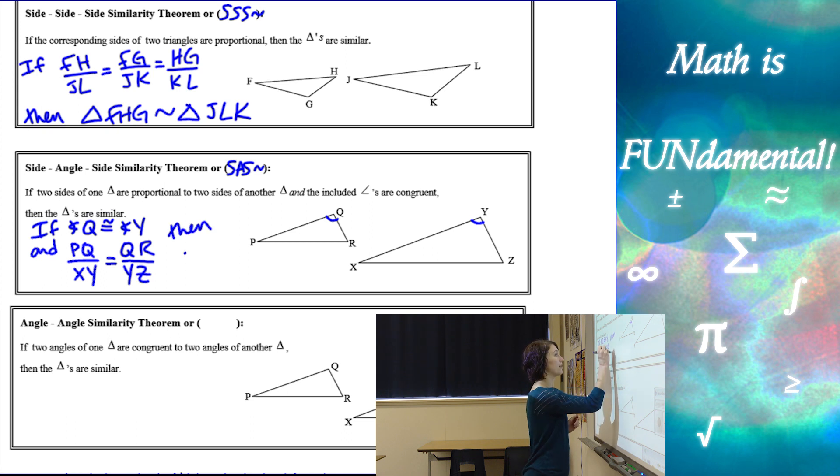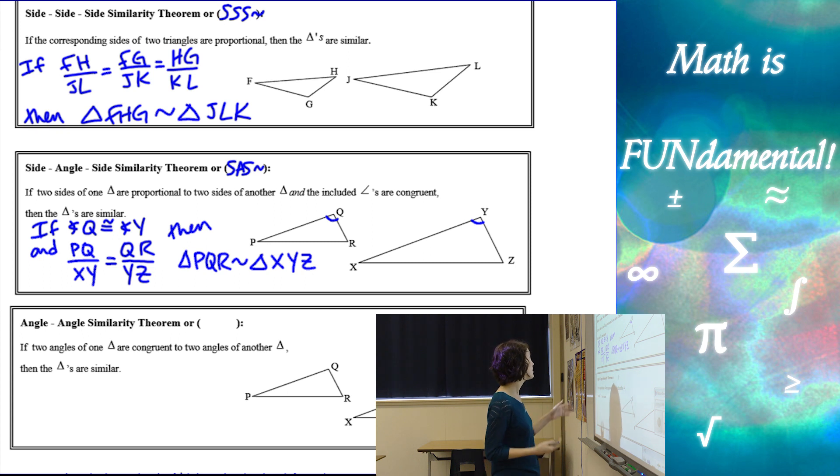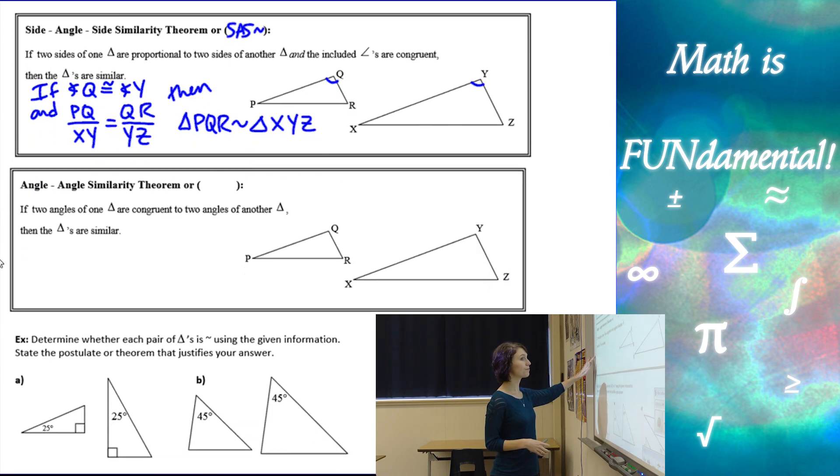then I could say that triangle PQR was similar to triangle XYZ. So those are the two things that need to be true in order to use the theorem.